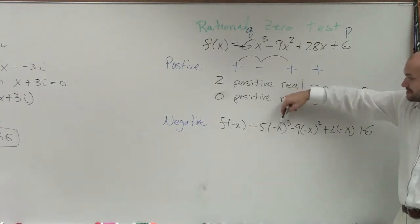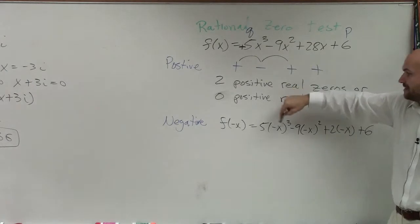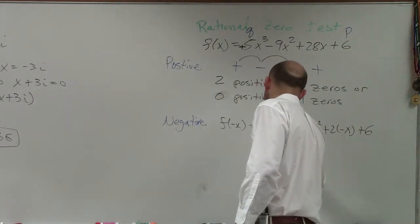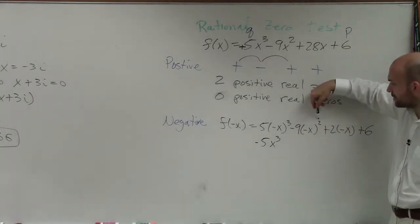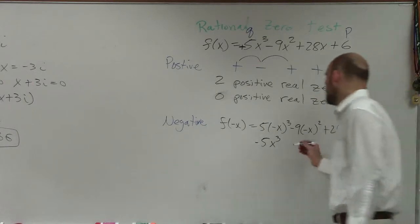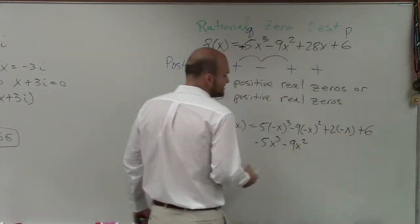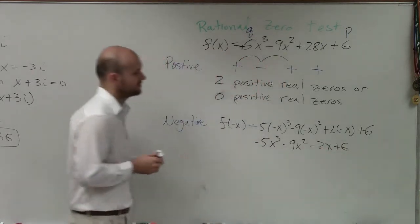Now, we just look at this. Any negative number raised to an odd number is still going to be negative. Negative times a positive five is going to now be a negative 5x cubed. Any negative number raised to an even power is now positive. Positive times negative nine would be negative 9x squared. Two times negative x would be negative 2x plus six. So again, I bring down the signs.